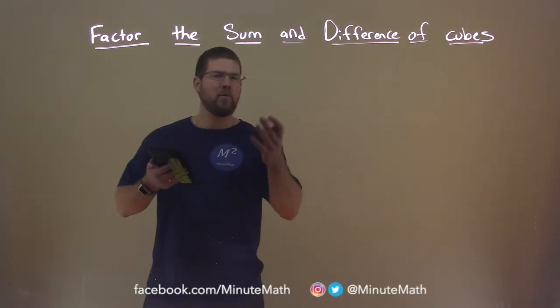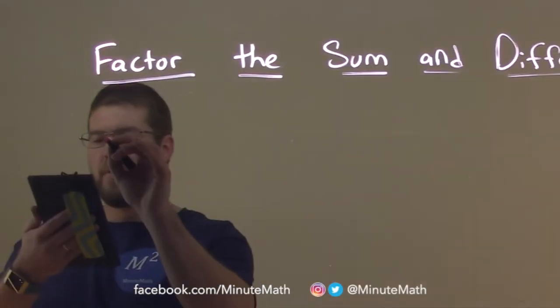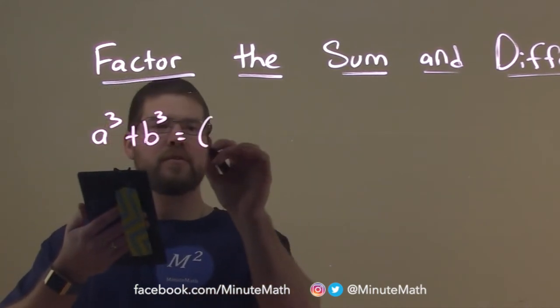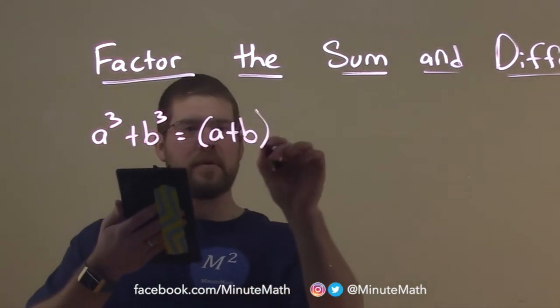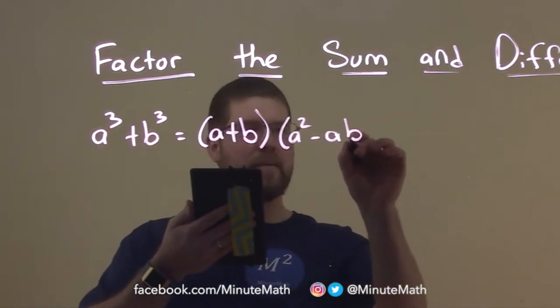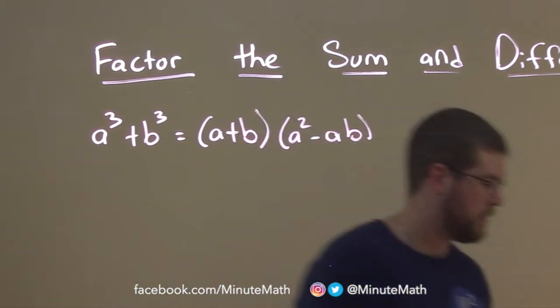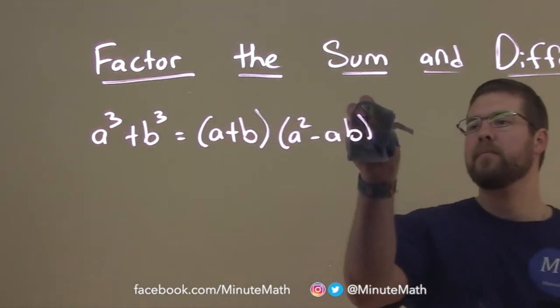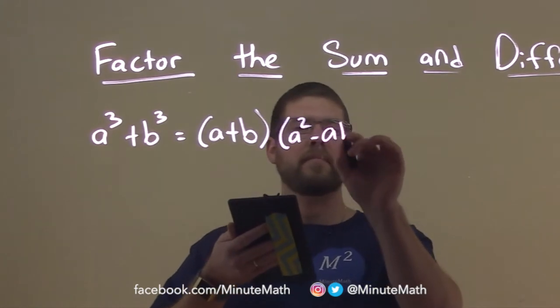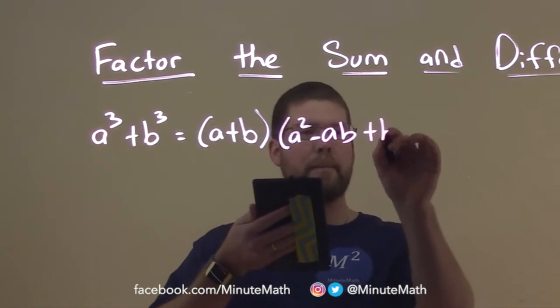So, let me go write both of those in a quick little nutshell here. We have a to the third plus b to the third is equal to a plus b times a squared minus ab plus b squared.